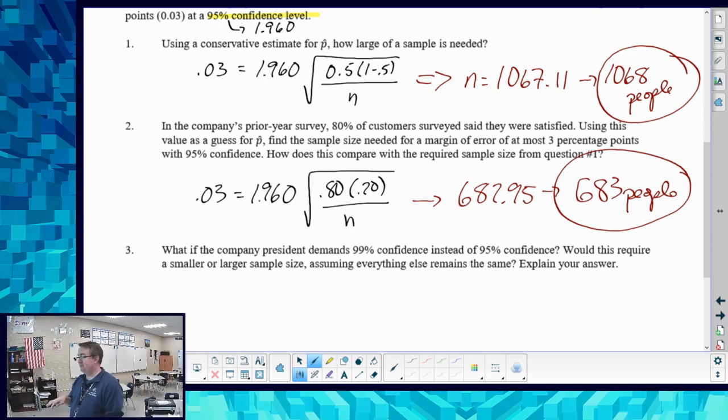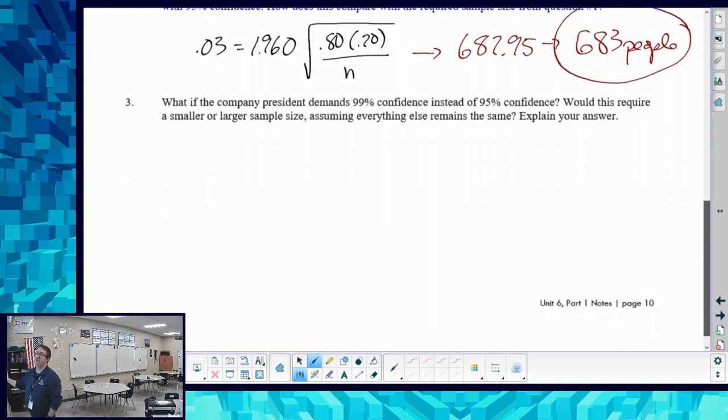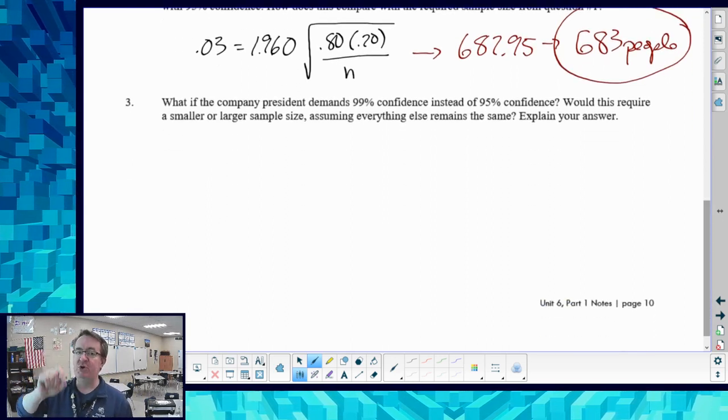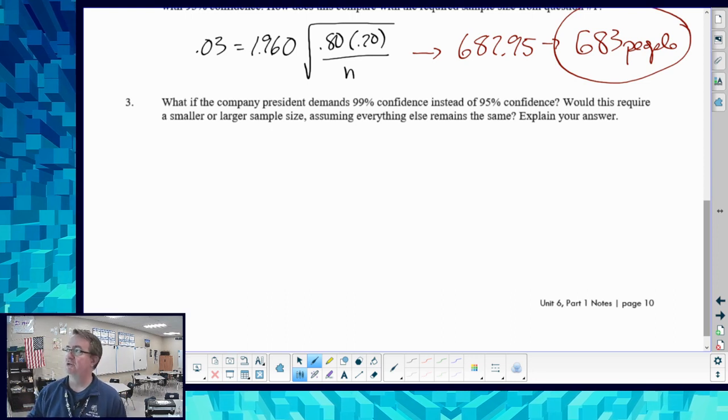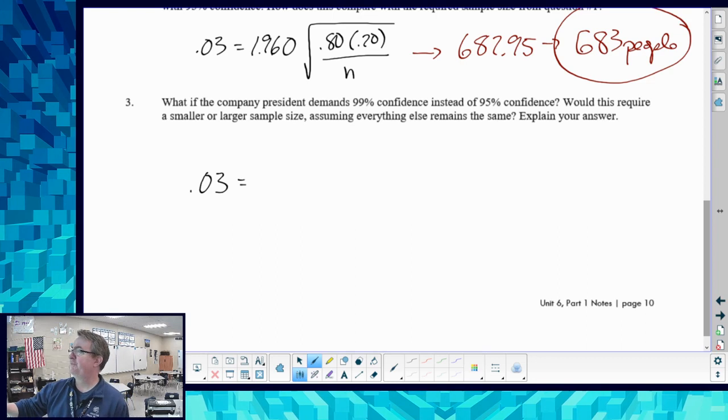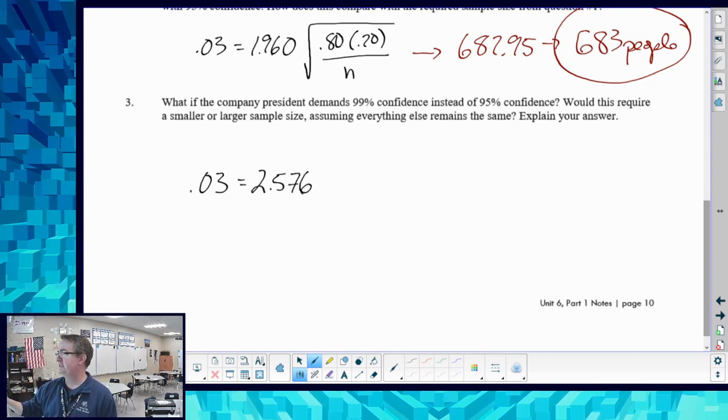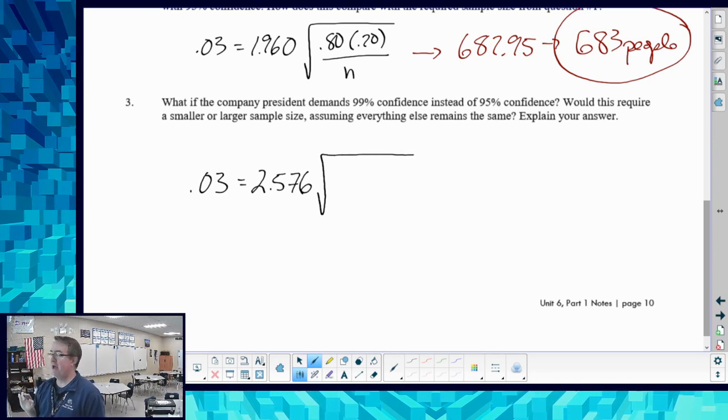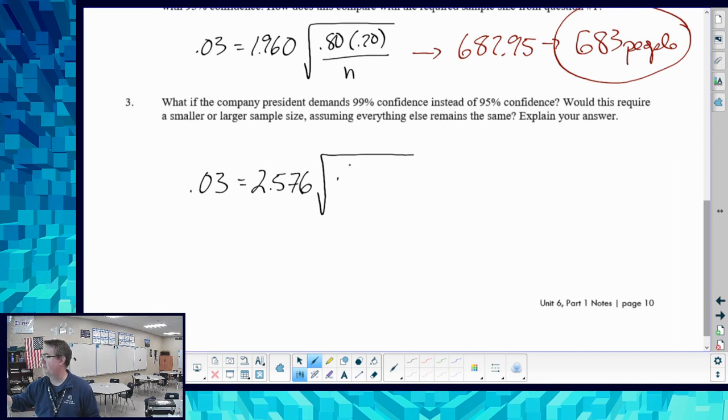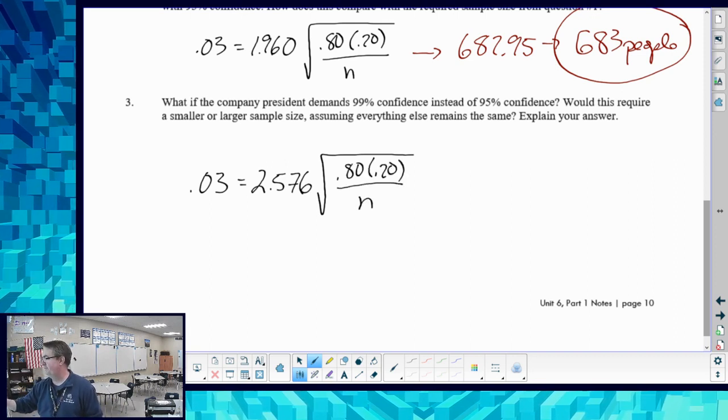Now, if the company president comes back and wants a 99% confidence interval instead, what would change - would you need a smaller or larger sample size? This is a beautiful type of multiple choice question. So let's set this up. I've got 2.576 for my z star value. We're intending it to be the top part over there - 80 times 20 divided by n.